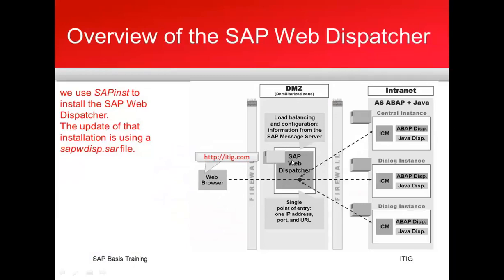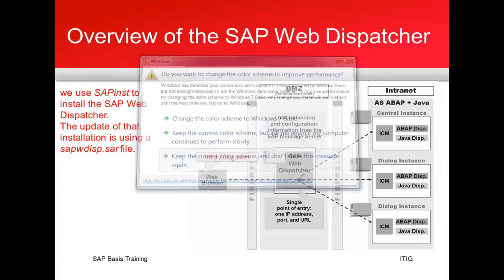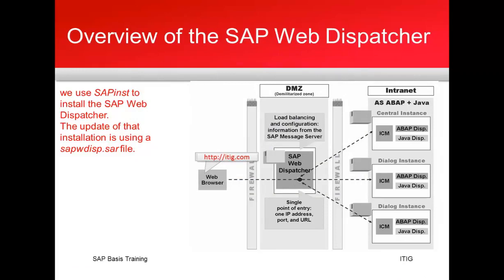Here you can see the location where the SAP Web Dispatcher is normally placed. You have a demilitarized zone. If you are familiar with the architecture of a system — especially if your user is trying to connect from the internet — the traffic will pass through a zone called the demilitarized zone. This zone is created to hide the main SAP systems behind another layer of firewall, so that if someone tries to hack in, it will go through one additional layer of firewall.